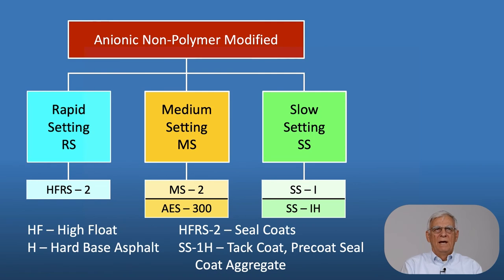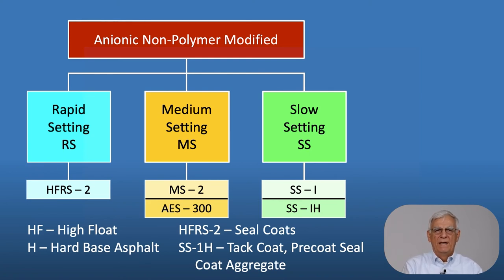We have a number of non-polymer-modified anionic emulsions with a negative charge on the emulsifying agent — those being rapid setting, medium setting, and slow setting. HF stands for high float. H stands for a hard base asphalt — that is, the asphalt binder from which the emulsion was made is harder than a companion grade. HFRS stands for high float rapid setting emulsion, grade 2, used for seal coats. SS1H — the H indicates a harder base asphalt — is sometimes used for tack coats and also for pre-coating seal coat aggregates.